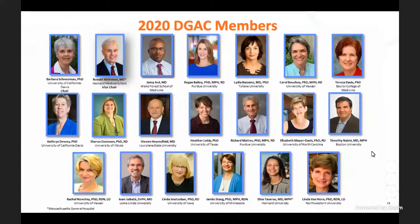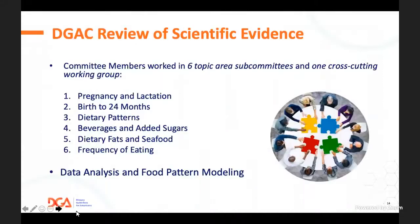The committee was a bit larger this year due to the expansion to birth-to-24 months, pregnancy, and lactation. All members are PhDs and MDs working in academic settings and hospitals, providing an unbiased scientific review. The committee was assigned to six topic subcommittees: pregnancy and lactation, B24, dietary patterns, beverages and added sugars, dietary fats and seafoods, and frequency of eating. There was also a cross-cutting Dietary Analysis and Food Pattern Modeling Committee that supported the process and each of the subcommittees.